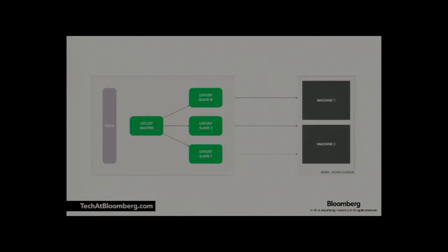This is a simple diagram of our architecture. On the left is an isolated cluster where our tests run — we have a single master and a bunch of slaves. We also use a Redis instance to share data across slaves. We pre-populate data from our database into Redis before running tests, so slaves can pick a random user ID from Redis and start sending requests for that user to our alpha cluster, which is isolated — that's where our services are running.